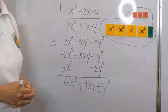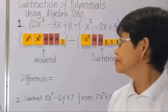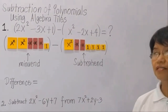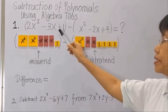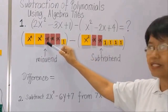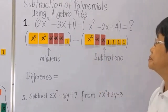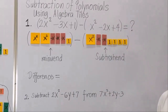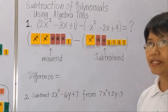So let's move on to subtraction of polynomials. We again use the algebra tiles to concretize our subtraction. Example number one, we have 2x squared represented by the two squares here, minus 3x represented by the three negative red tiles, plus 1, minus x squared, minus 2x, plus 4. The rule in subtraction is you identify first the minuend and the subtrahend.